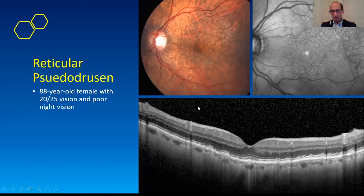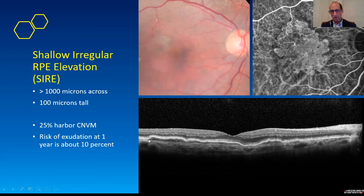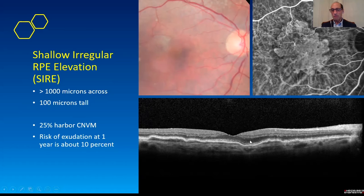Those are your two main drusen types: soft drusen and reticular pseudodrusen. This is the shallow irregular RPE elevation — the SIRE — which is a new entity. Bill Rosenfeld calls this the double layer sign. The RPE comes up, and you've got the Bruch's line down here with material between them, but this is really big — probably 2,000 microns across. These are greater than 1,000 microns across and tend to harbor neovascular membranes about a quarter of the time. The ICG of this patient shows a neovascular complex — non-exudative — but sometimes these are dry. That's a shallow irregular RPE elevation, or double layer sign.